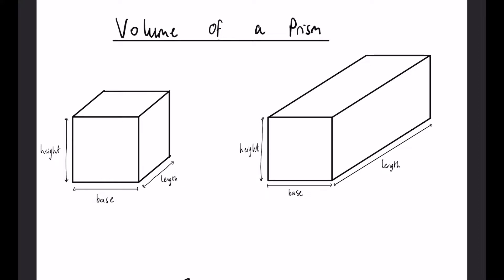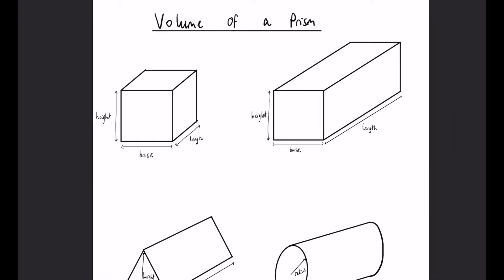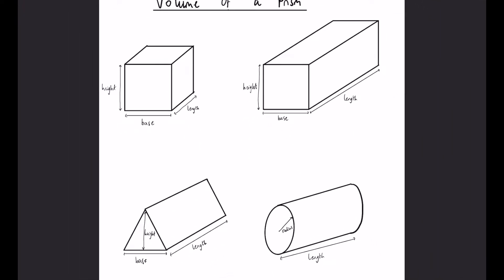Have a think about what they all have in common. If you look at this diagram, take a bit of time. Hopefully you've managed to work it out, but they're all just 2D shapes—squares, triangles, circles—that everyone is familiar with, that have just been dragged out in some way or stretched.